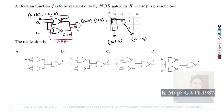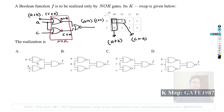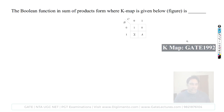By De Morgan's law, this AND gate can be changed to a NOR gate. So the entire circuit can be implemented using only NOR gates. Checking the options: option A is not matching, option B is not matching, option C is not matching, option D is matching. The correct answer is option D.